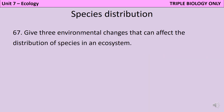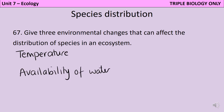The distribution of a species in an ecosystem can be affected by the temperature, the availability of water, and also the composition of atmospheric gases.